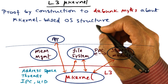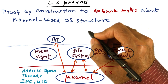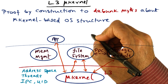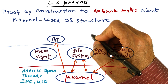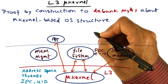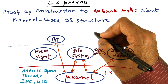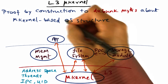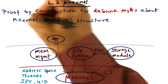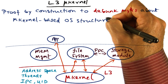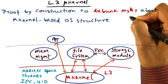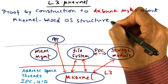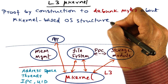The key word when I describe the performance loss in microkernel-based operating system structure is the potential for performance loss. What L3 microkernel does is, by proof of construction, they show that they can debunk the myths about microkernel-based operating system structure.